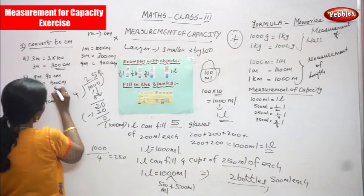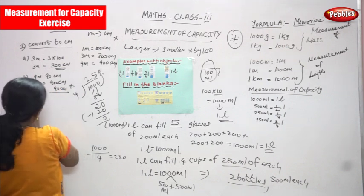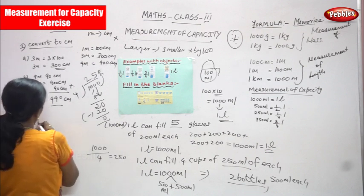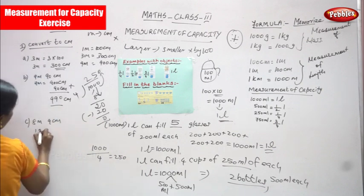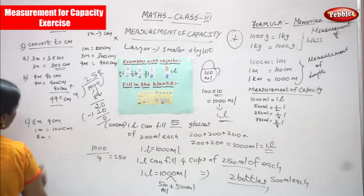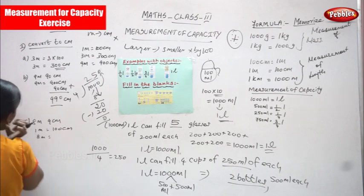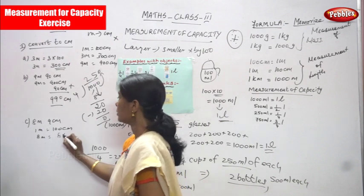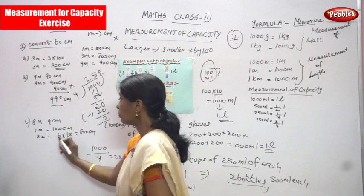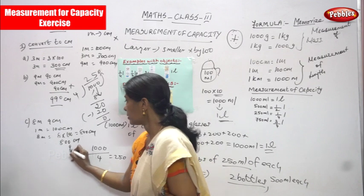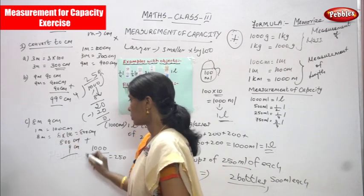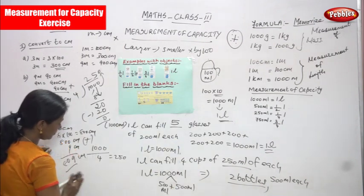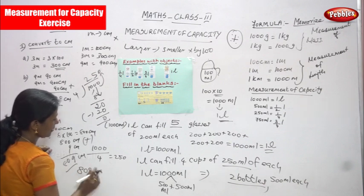Then already 90 centimetre is given. So 900 centimetre add with 90 centimetre — the answer is 990 centimetre. Next question: 8 metre and 9 centimetre. 1 metre is equal to 100 centimetre. So 8 metre — metre to centimetre you multiply — bigger unit to smaller unit. 8 into 100 you get 800 centimetre. Then 800 centimetre add with 9 centimetre — because already 9 centimetre is given — you get the answer 809 centimetre. 809 centimetre is the right answer.